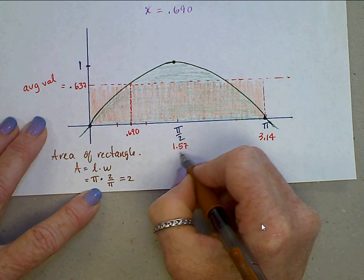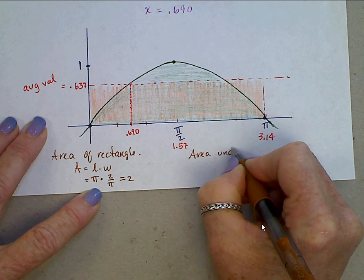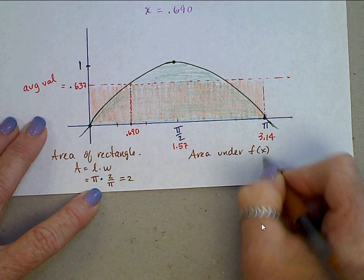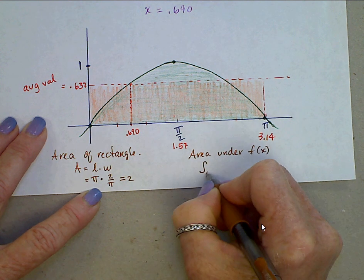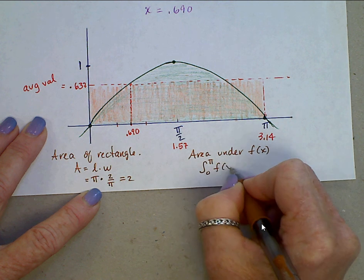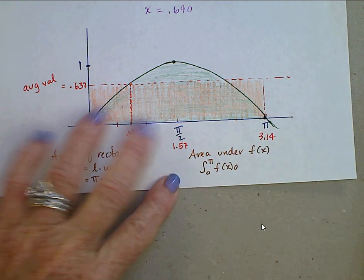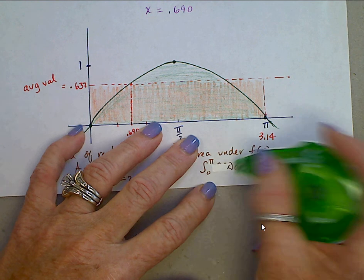What's the area under f of x? It's the integral from 0 to pi of f of x. What was our function? Sine x.